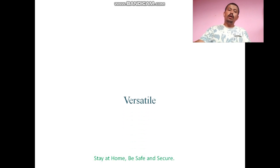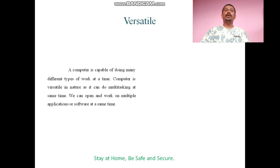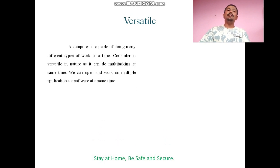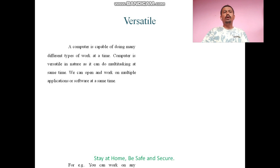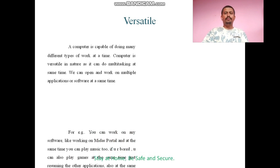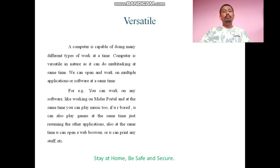The next feature of a computer is versatility. A computer is capable of doing many different types of work at a time. A computer is versatile in nature as it can do multitasking — meaning doing many types of work at the same time. We can open and work on multiple applications or software simultaneously. For example, you can work on Midas portal and at the same time play music.